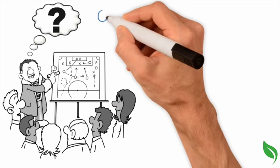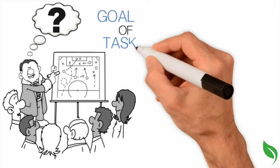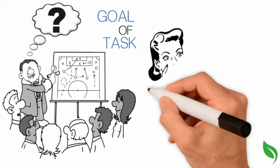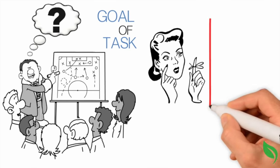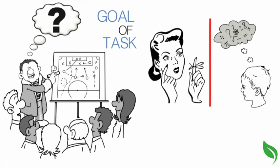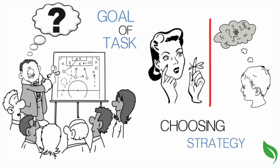Thus, the first question to ask is, what is the goal of the task? What is helpful for simply remembering information is different than what is helpful for evaluating or creating information. And so choosing a strategy depends on what the learner needs to do.